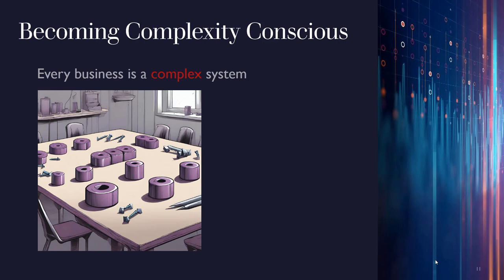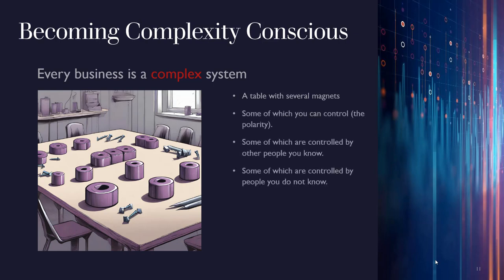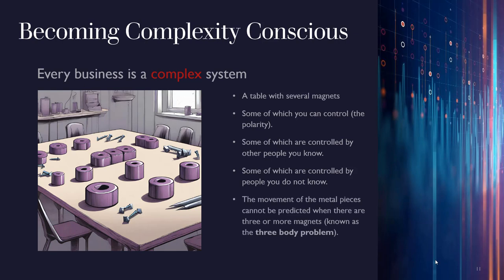If you're still struggling with the idea of a business being a complex system, imagine a table with several magnets — large purple cylindrical shapes — some of which you can control the polarity and strength of, but others are controlled by people you don't know about. The movement of metal pieces like nuts and bolts on the table can be predicted when there are one or two magnets, but once you reach three or more magnets, you cannot predict what will happen. An ordered system is pushed into a complex system. This is known in physics as the three-body problem.